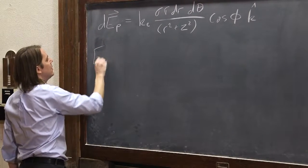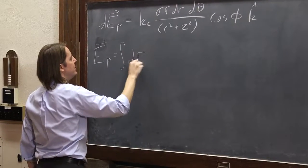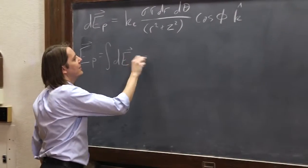Let's say that EP, the thing we want, the E field at point P, is the integral of DEP. We're just adding up all the DEPs. And that's the integral of this.